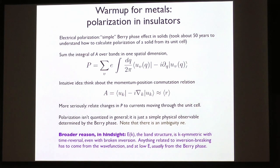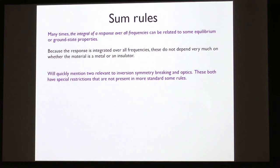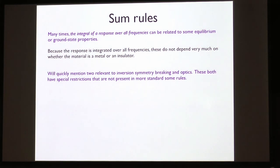Things like second-order optics also appear if there's time-reversal symmetry and broken inversion, so those must involve wave-function properties. These sum rules are basically ways to relate things about nonlinear optics to things about polarization — which is useful because it gives guidance: if you want to maximize a certain nonlinear optical property, look for materials with certain polarization properties. Sum rules generally say the integral of some measurable response over all frequencies is related to something about the ground state.